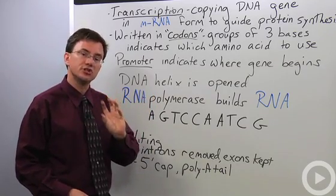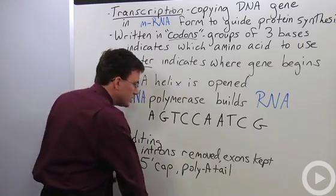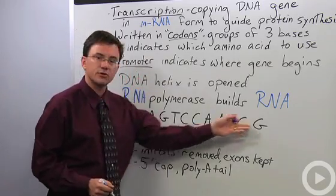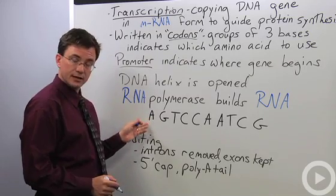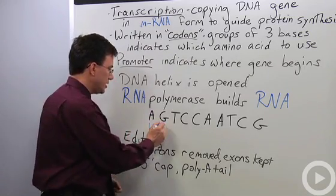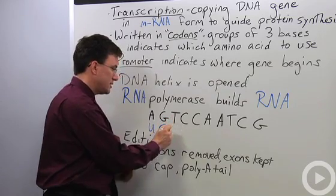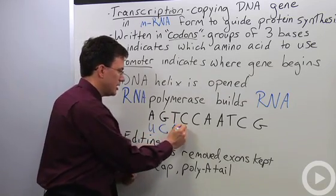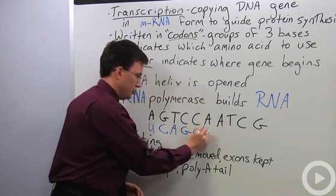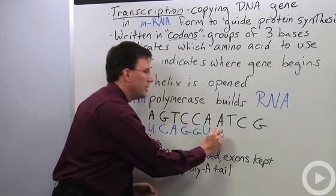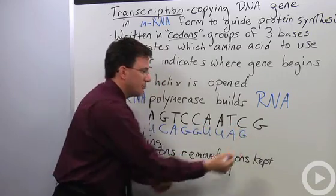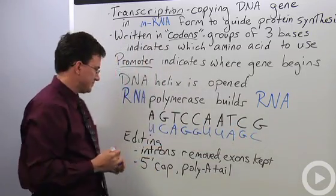RNA instead uses uracil. So if I was an RNA polymerase coming along and I see the DNA sequence, where I see an A I'll put U (uracil); where I see a G I put a C; where I see a T I put an A; C I put a G; C I put a G; A I put a U; A I put a U; T I put an A; C I put a G; G I put a C. Pretty simple.